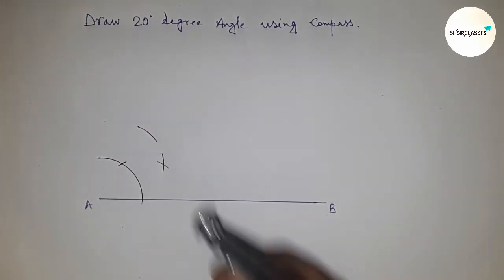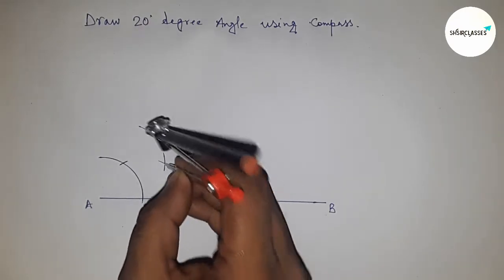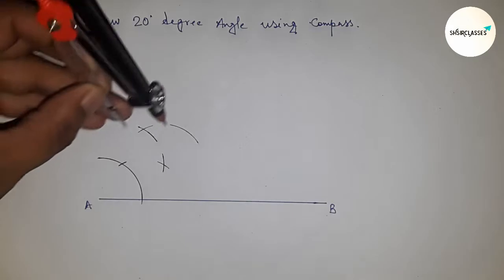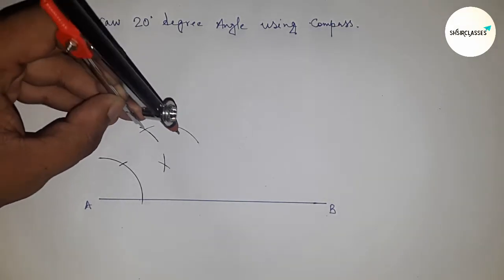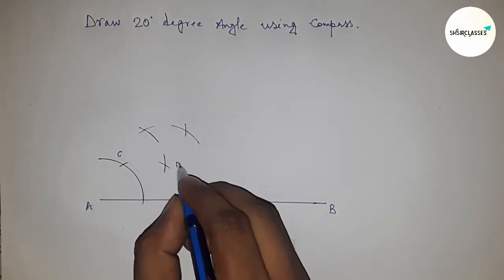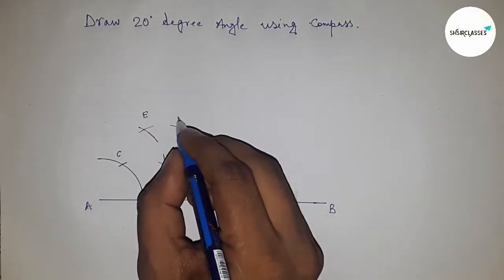If you don't know how to construct a 40-degree angle, then first watch my video which I gave in my channel. So here now constructing a 40-degree angle. So this is C, D, E, and this is point P.